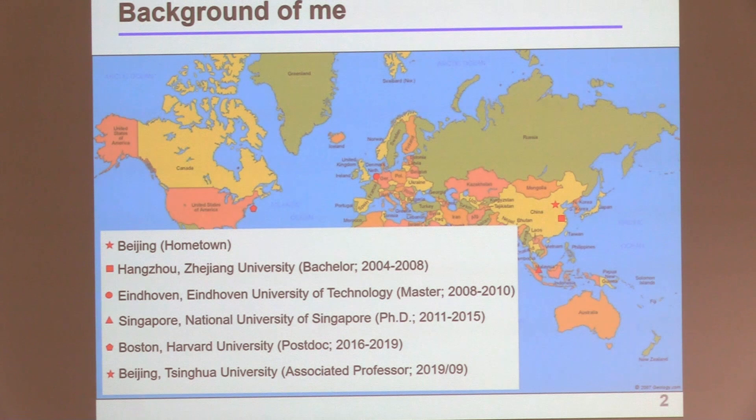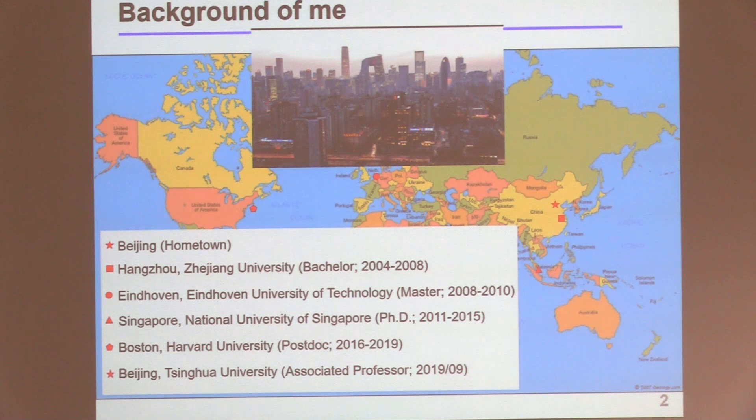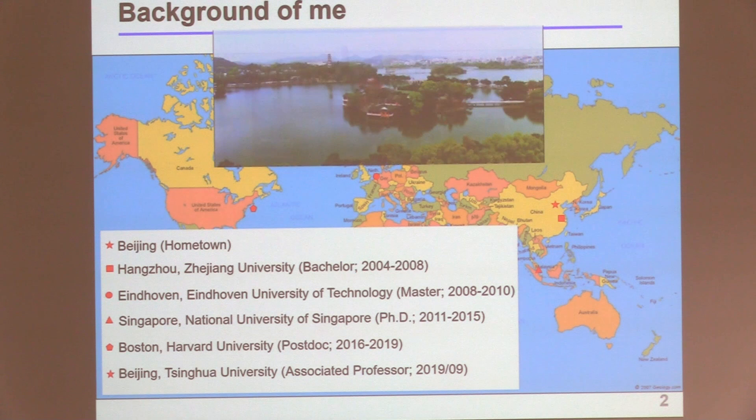Because I'm new, I want to use just a little bit of time to introduce myself. I was born in Beijing — maybe you'll see some different photos of Beijing, but to me Beijing looks like this every day. I did my bachelor in Hangzhou, in the middle part of China. It's famous for West Lake, which I think is the best park in China.